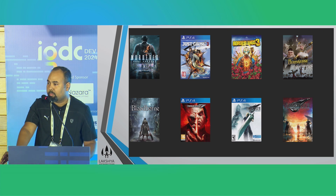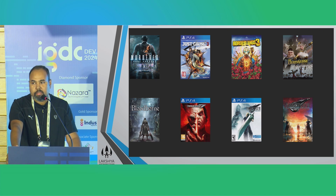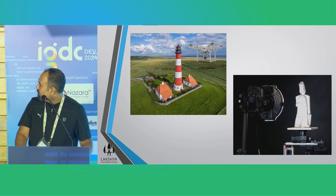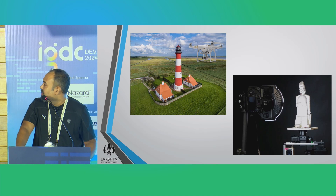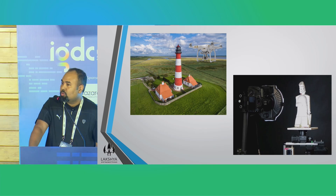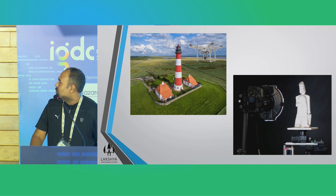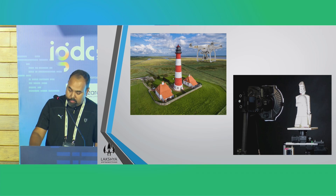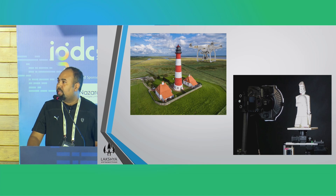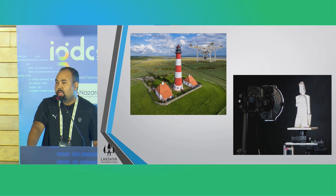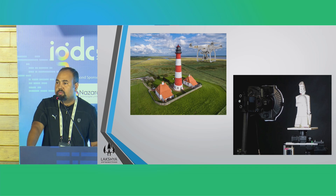For anyone familiar with creating 3D assets, photogrammetry can be divided into two broad categories: aerial photogrammetry and close range photogrammetry, where you hold the camera in your hand or mount it on a tripod, revolve around the subject, and create a series of images.